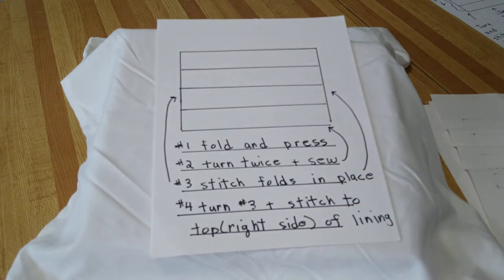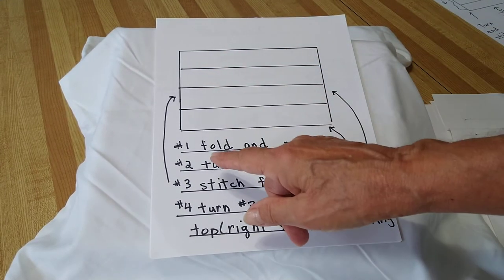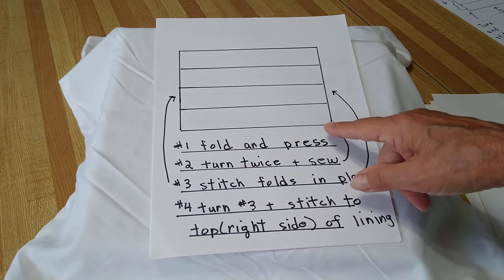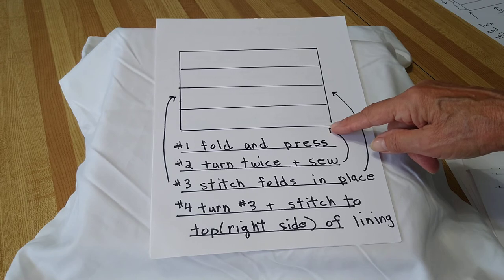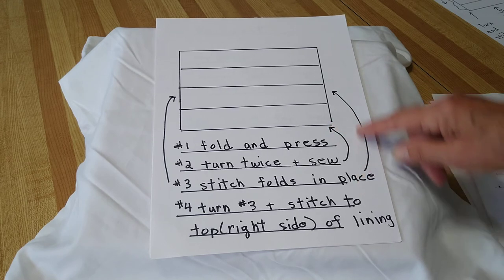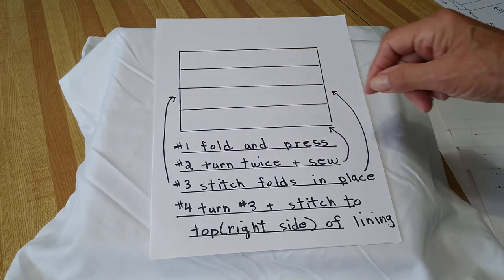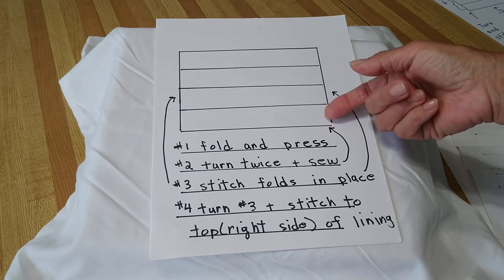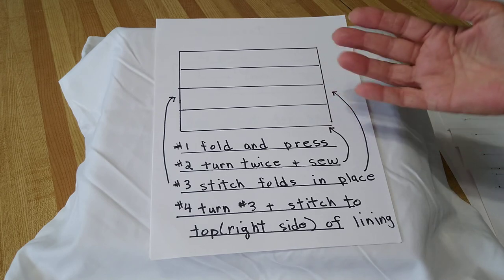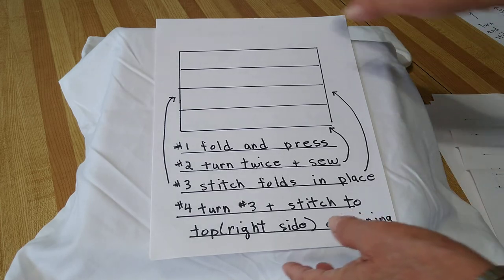Next, after you fold and press it, you're going to turn this edge twice and stitch it down. Then you're going to stitch this in place with the folds. Then you'll turn these pieces under, and then you're going to lay it on top of the lining and stitch it down.